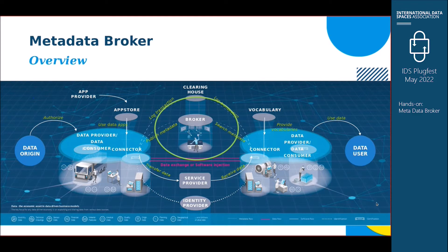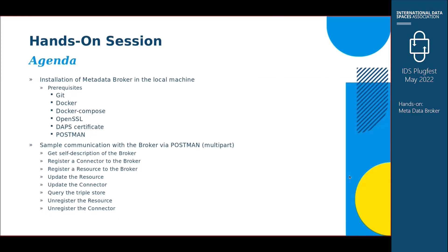The agenda for the hands-on session starts with the interactive installation of the Metadata Broker, for which we need Git, Docker, Docker Compose, OpenSSL, a DAPS certificate, and Postman. Once the Metadata Broker is installed on our local machine, we will see some sample communication to the broker, where Postman acts as a demo connector to show communication between the broker and a connector.